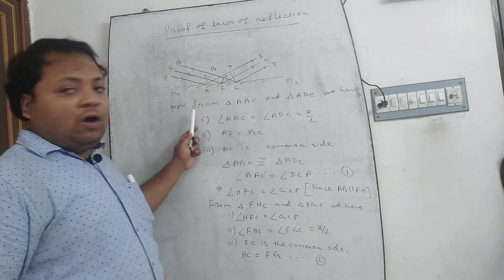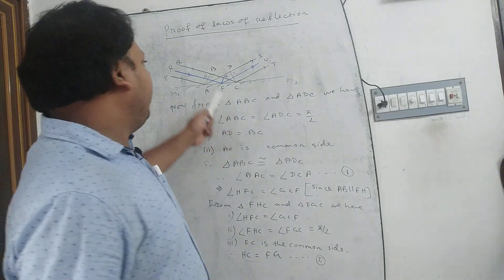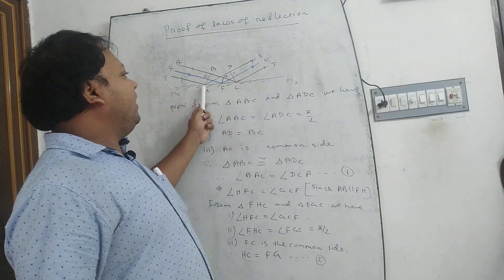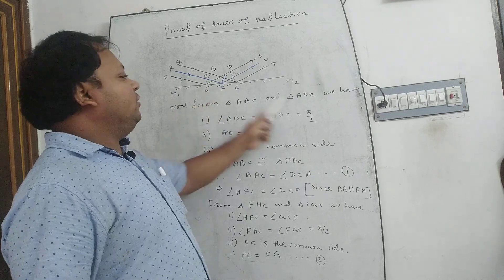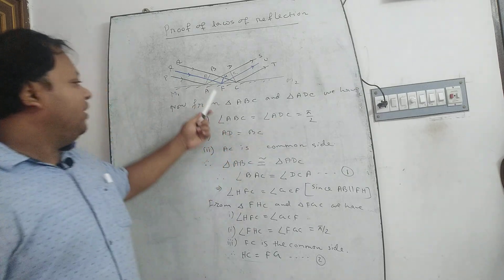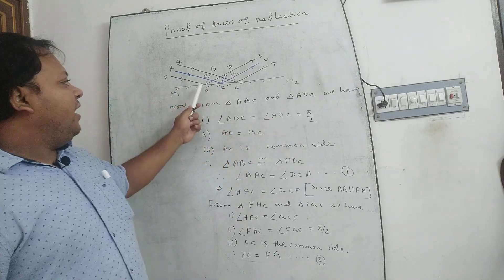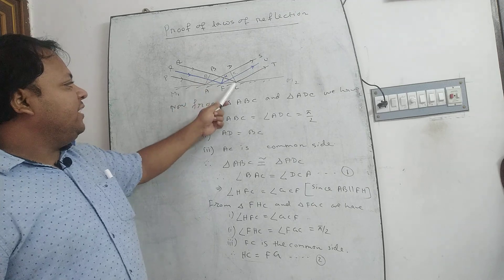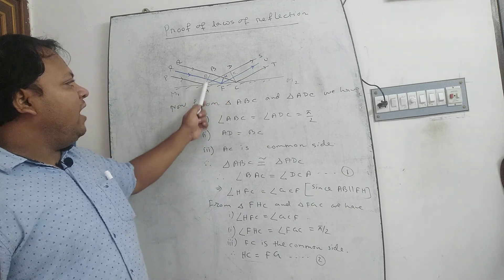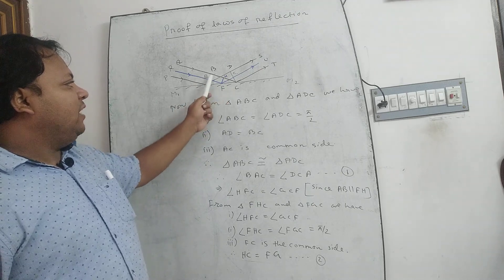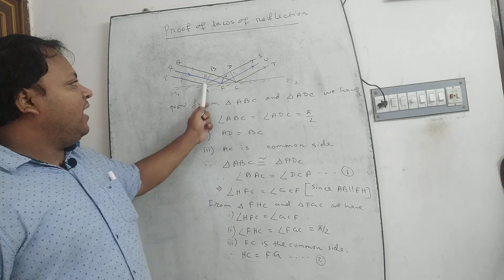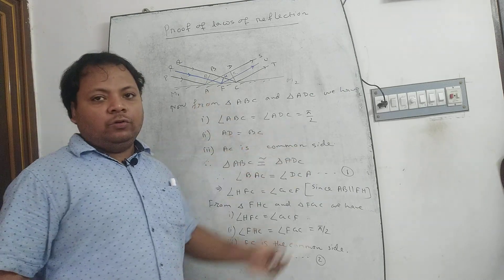Now, from triangles ABC and ADC, we have: first, angle ABC = angle ADC = π/2, because AB is the wavefront of QC, meaning AB is normal to QC, and BC is the wavefront of AS or CT, meaning DC is normal to AS.